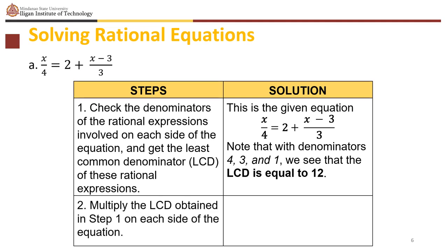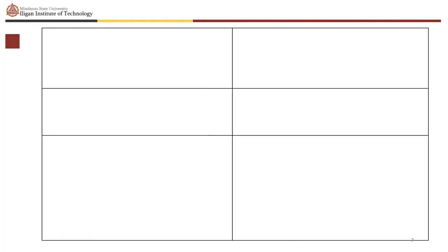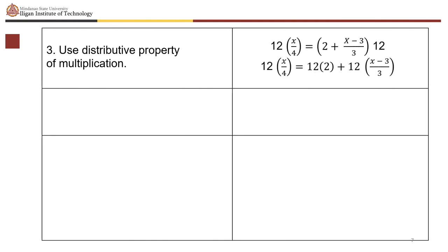Multiply the LCD on each side of the equation. So we multiply 12 on both sides: 12 times (x over 4) equals (2 plus (x minus 3) over 3) times 12. Using the distributive property: 12 times x over 4 equals 12 times 2 plus 12 times (x minus 3) over 3.